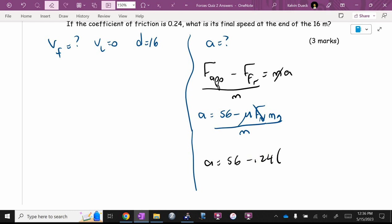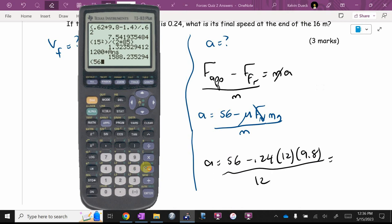A is going to be 56 minus 0.24. What's M? 12 times 9.8 all over 12. This might work out nice. 56 minus 0.24 times 12 times 9.8, close bracket, divided by 12. Nope. 2.314 in the bunch of sixes. I'm going to write 2.31, but I'm going to use my answer button.